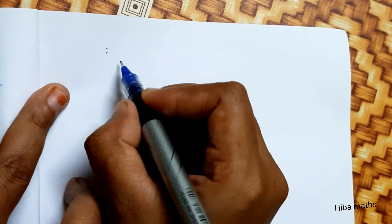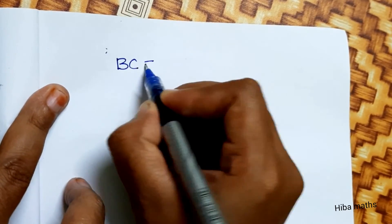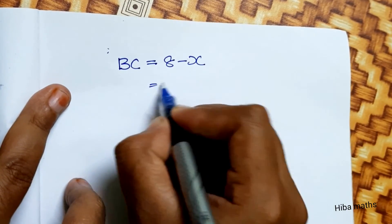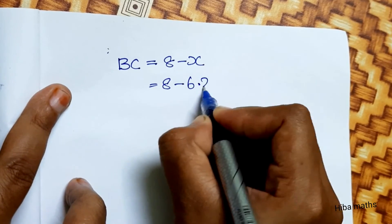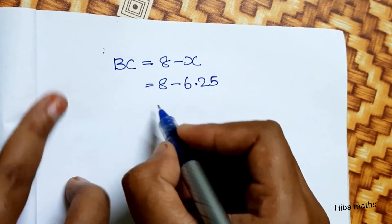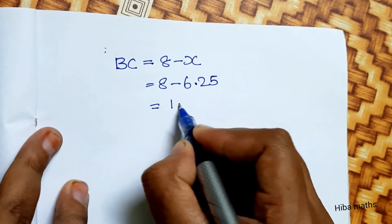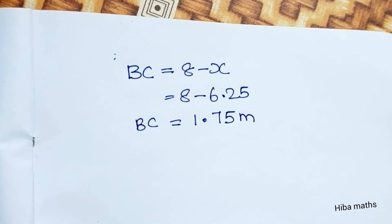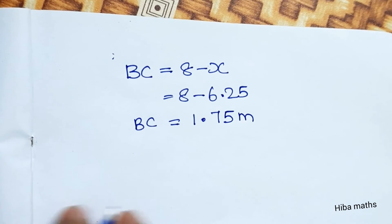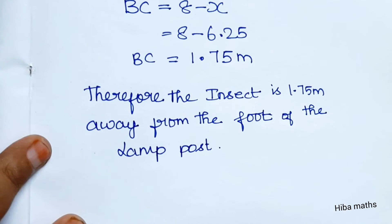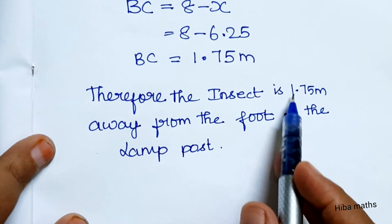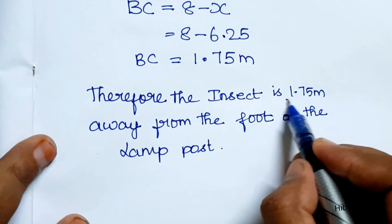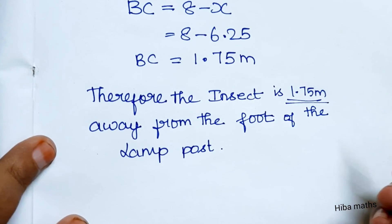We have x, but we need BC. BC equals 8 minus x, so 8 minus 6.25 equals 1.75 meters. Therefore, the insect is 1.75 meters away from the foot of the lamppost.